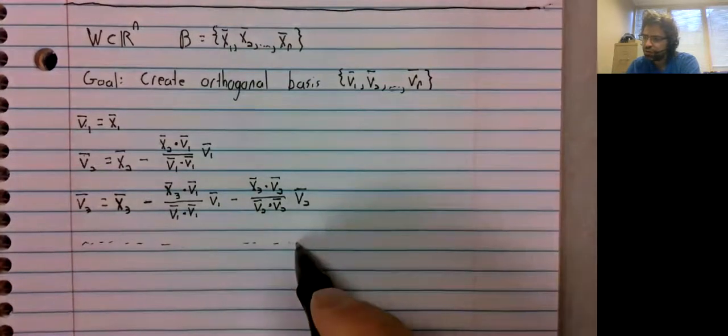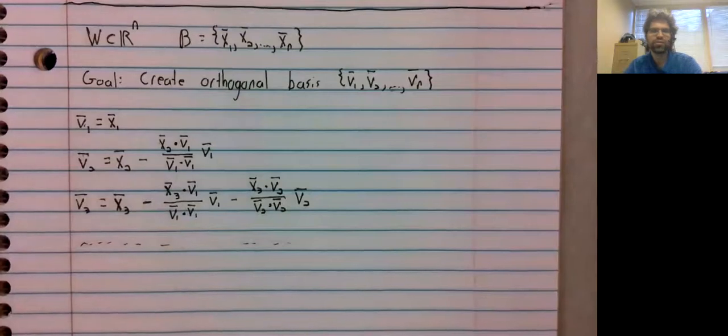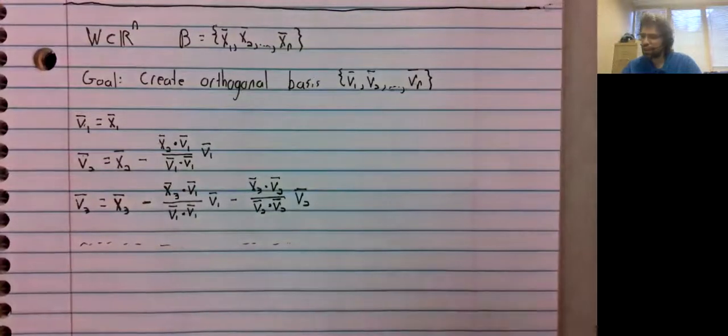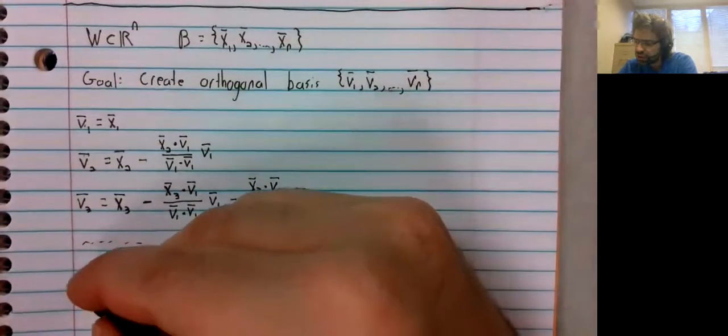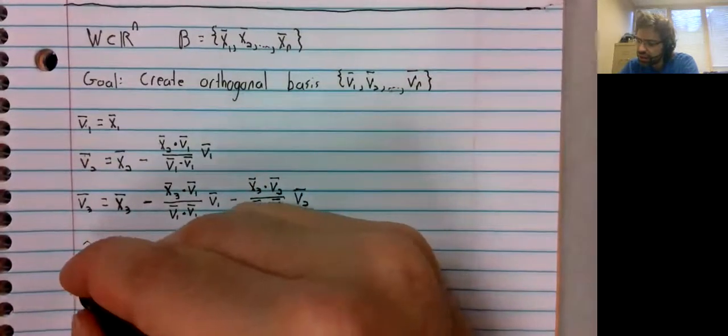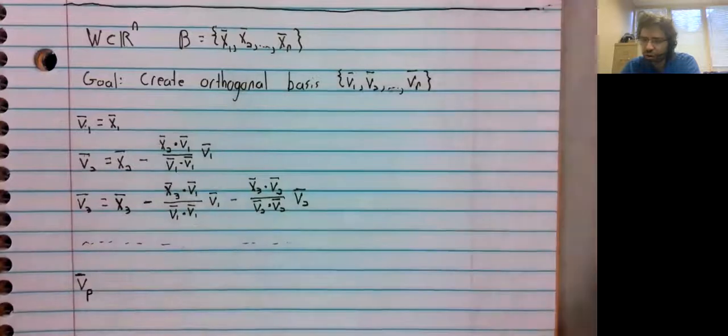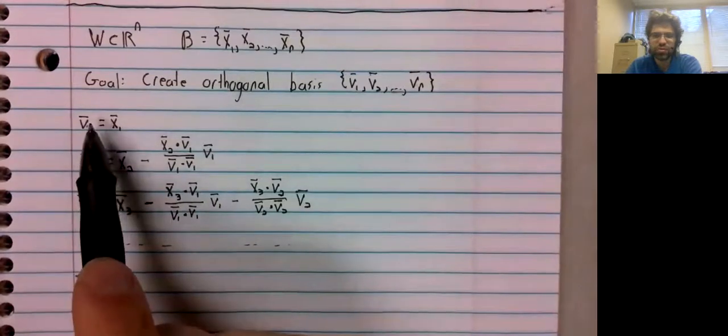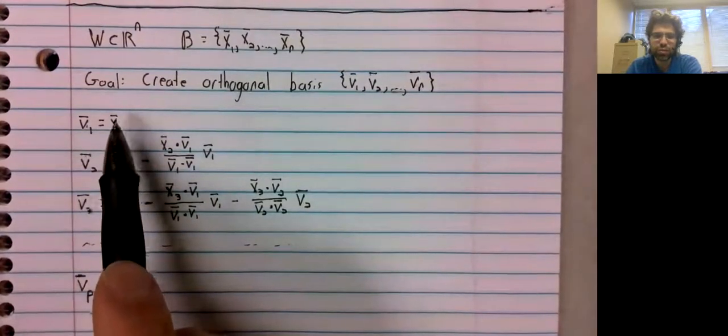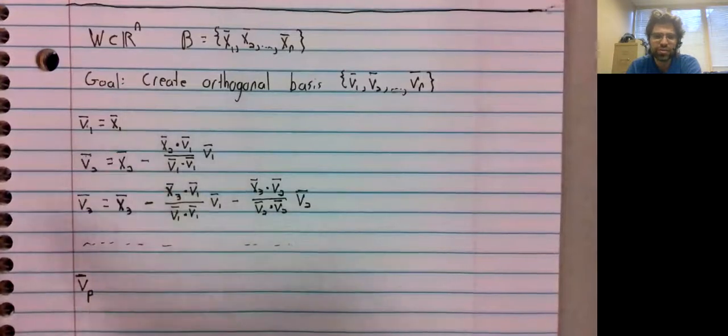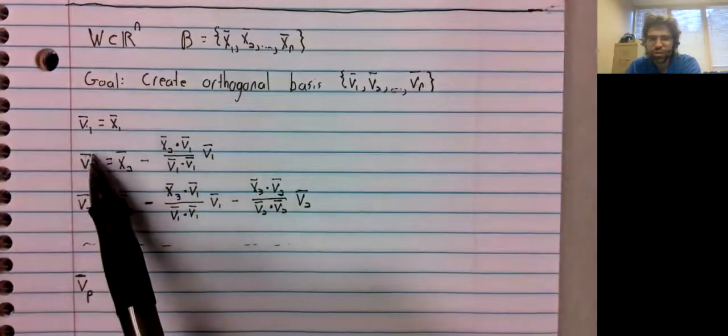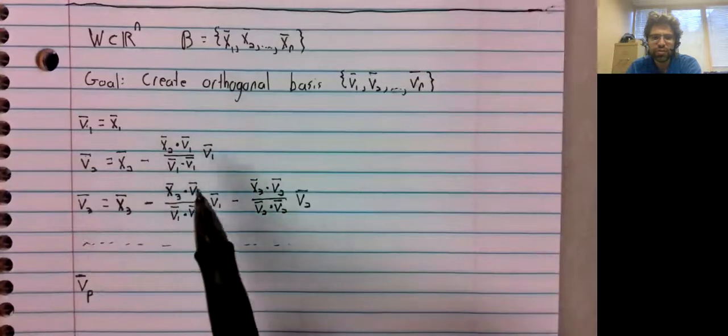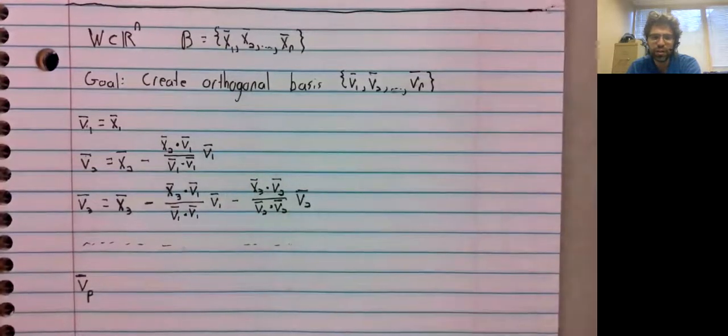And we proceed in this fashion. So notice that each of these v's is defined in terms of the v's that come before it. This first v was defined in terms of just the original basis x. So v2 is defined in terms of v1. v3 is defined in terms of v1 and v2.